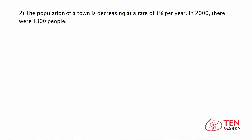The population of a town is decreasing at a rate of 1% per year. In 2000, there were 1,300 people. We want to model this with an exponential growth or decay function, and before we start writing out the function, we want to know: is this exponential growth or decay?